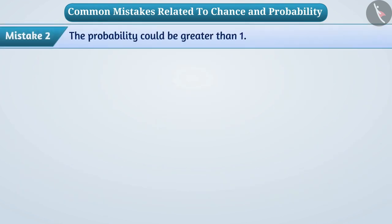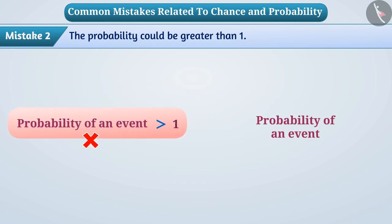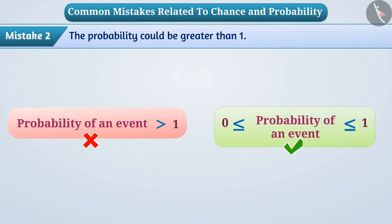Mistake 2: Understanding that the probability could be greater than 1. Some children think that the probability of an event can be 0 or greater than it, or 1 or less than it.